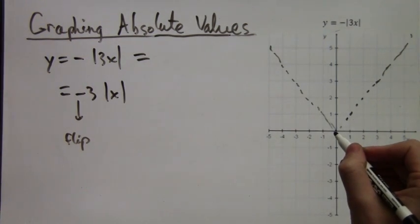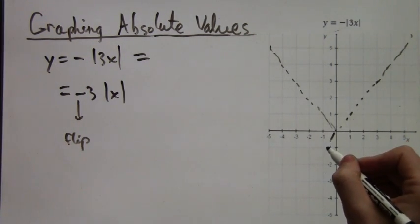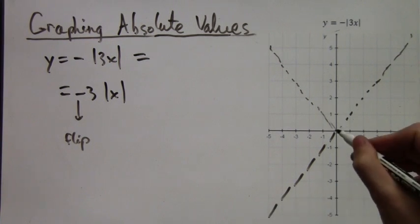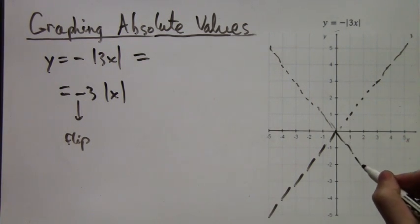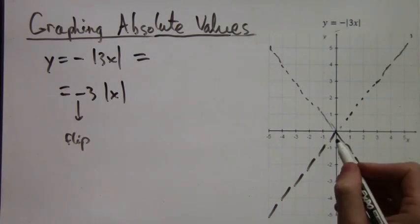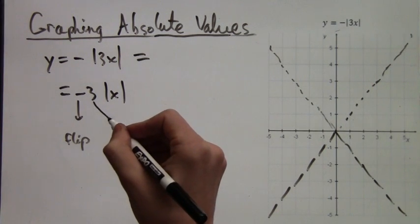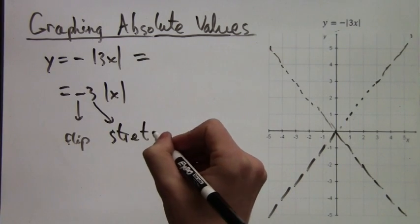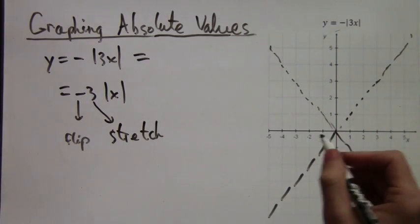So there I'm drawing with a slightly larger dotted line, slightly thicker. This is the flipped version. So that is actually the graph of y equals negative |x|. But we also need to have this 3 factor in there. And this 3, what it does is it stretches our graph.